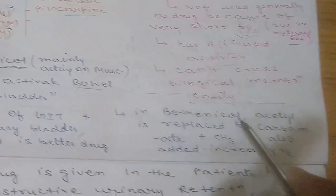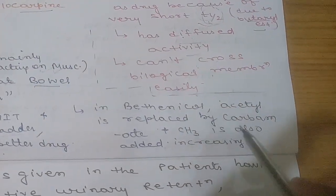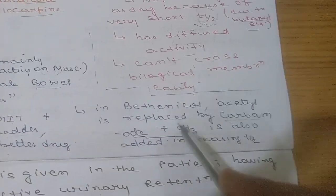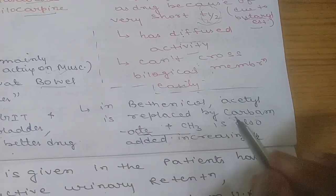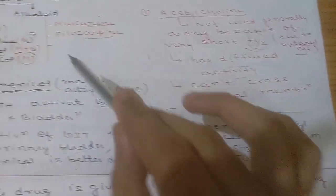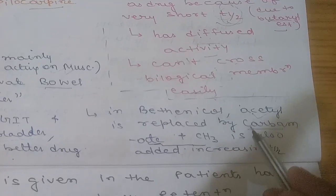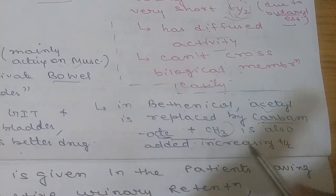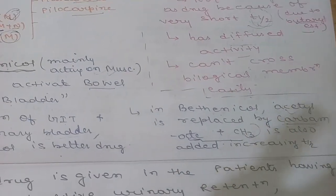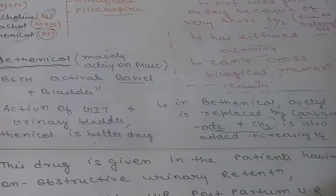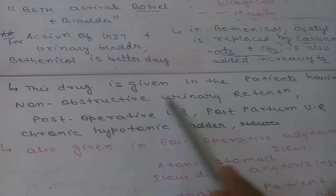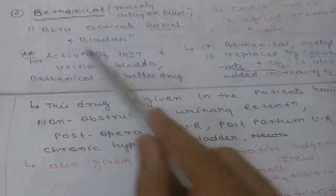In bethanechol, the acetyl group is replaced by a carbamate group and a methyl group is added. So acetylcholine is modified to form bethanechol. By removing the acetyl group and adding a carbamate and methyl group, bethanechol is formed and its half-life increases because there is no acetyl group, so acetylcholinesterase will not act on it.